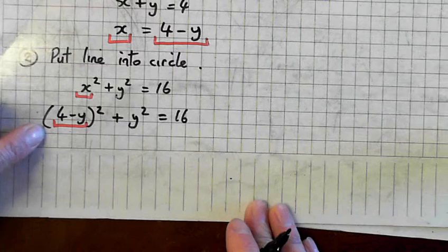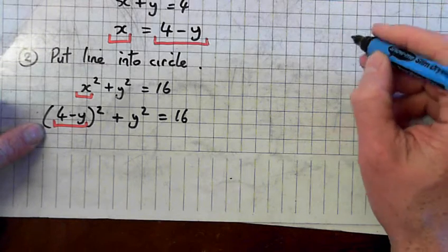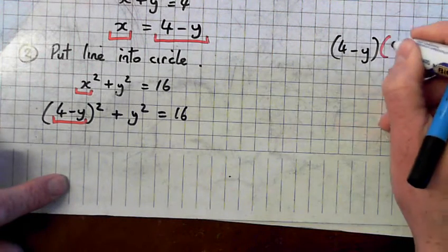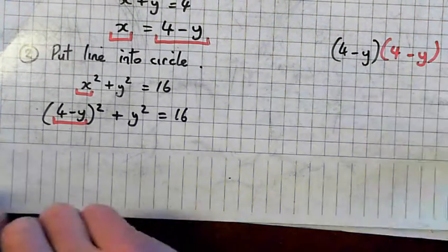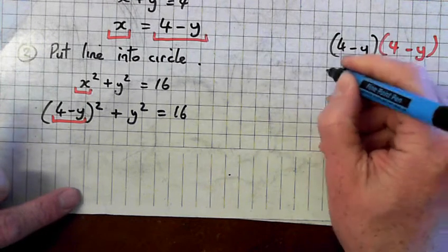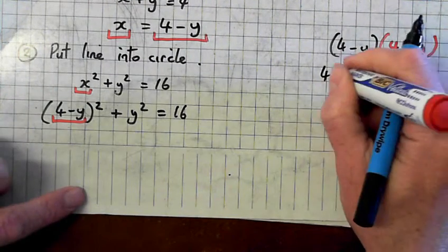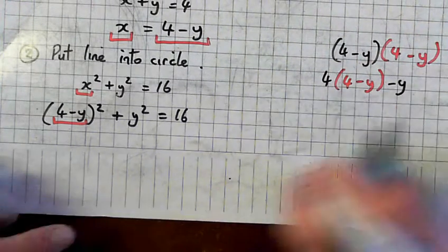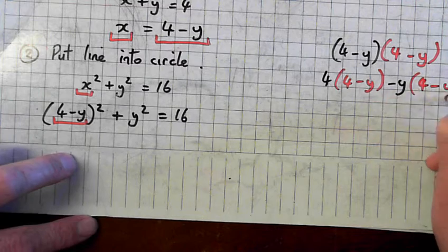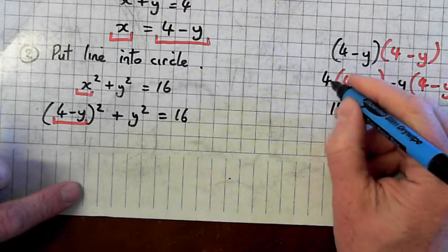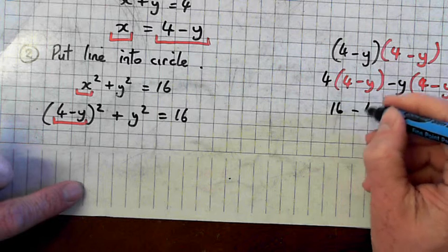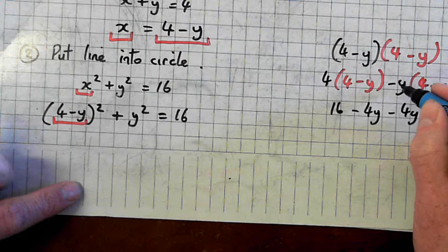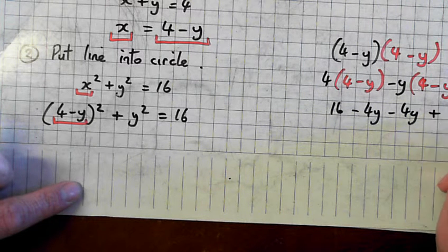Then again, we'll do it again. Rough work over here. 4 minus y times 4 minus y. So break up the first bracket, so it's 4 times the second bracket and minus y times the second bracket. 4 times 4 is 16. 4 times minus y is minus 4y. Minus y times 4. Minus y times minus y. Minus times minus is a plus.